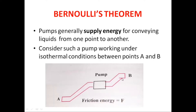For conveying liquid from one region to another, from one point to another point, we need a pump. This pump adds some amount of energy during the conveying process. Consider this pump working under isothermal conditions between two points A and B. You can see a pipeline that is connected to a pump — the pump generally supplies energy for conveying liquid from point A to point B.